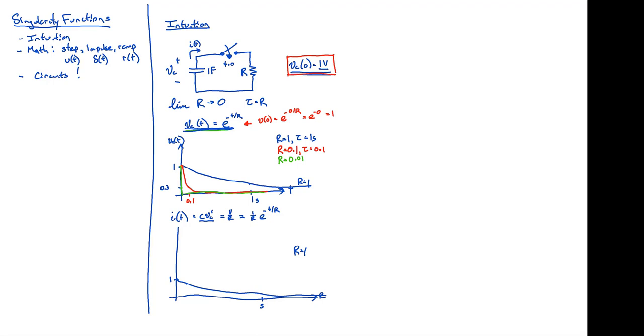How about if we drop our R down and make it now R equals 0.1? What's that current start off with? You're going to start out at 10. So now, with it at one tenth, it's going to start off, I'll draw it up here, as 10. And it's going to reach that one third point here. And it will look like this.